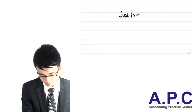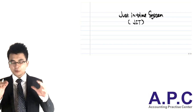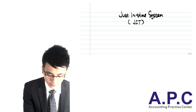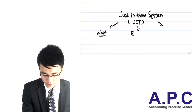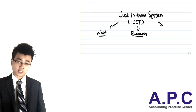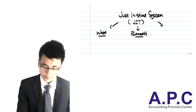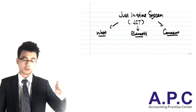Hi, this is Steve from ACCAPC.com. What we're going to do today is look at the just-in-time system, also called the JIT system. Within the JIT system, there are particularly three aspects we're going to look at: firstly, what is the JIT; secondly, the key elements within the JIT in order to be successful using it in real life; and thirdly, some comments about its advantages as well as disadvantages.